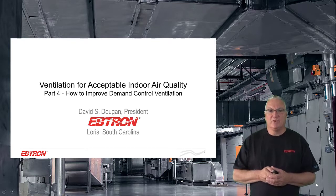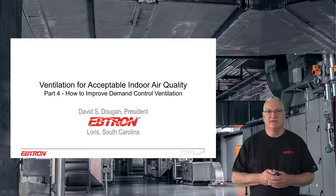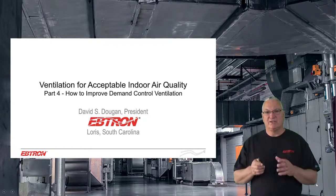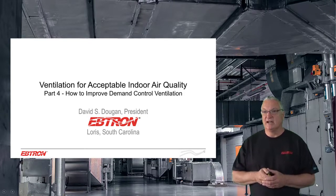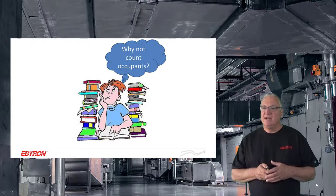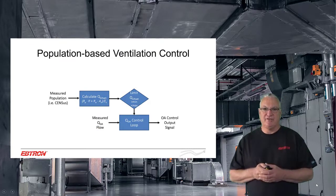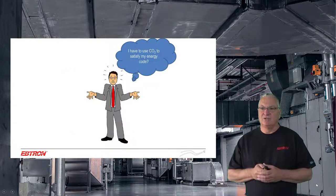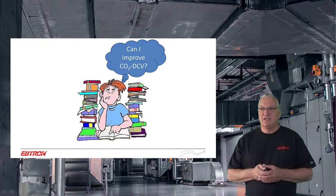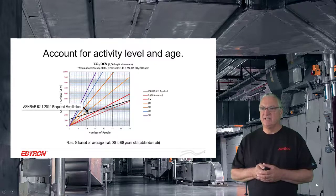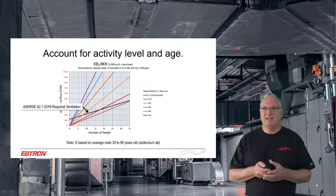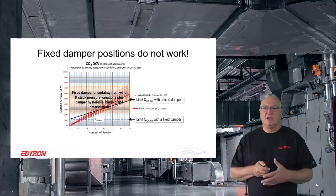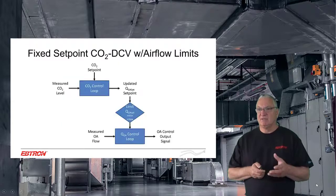When we get to part four, demand control ventilation really does make sense on a lot of spaces, particularly high occupant density spaces with extreme population variability. We want to go through how to improve it. We're going to talk about occupant counting, give you a strategy for occupant counting, and show you some of the uncertainties there — including the fact that there's no lag error. For those who have to use CO2, we're going to improve CO2 DCV, talking about accounting for activity level and age, and then setting limits — not with dampers, because there's so much variability, but with airflow measurement.